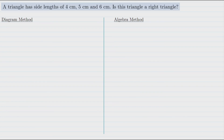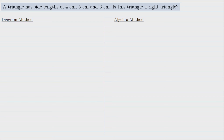In our final example we're going to determine whether or not a given triangle is a right triangle. We're told the side lengths are 4 centimeters, 5 centimeters, and 6 centimeters. If it's a right triangle, it would have to satisfy the Pythagorean theorem — that's how we'll figure it out. I strongly recommend beginning by drawing a diagram. If this triangle was a right triangle, it would have to have a hypotenuse of 6 since that's the longest side, so I'll draw a diagram with sides 4, 5, and 6 centimeters, with a question mark at the potential right angle since we don't know yet.